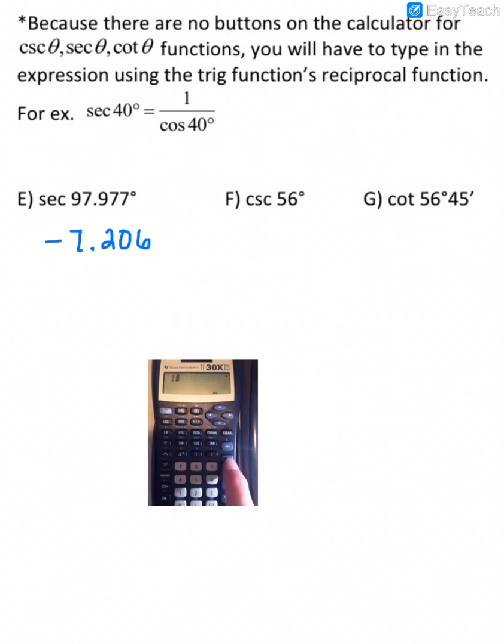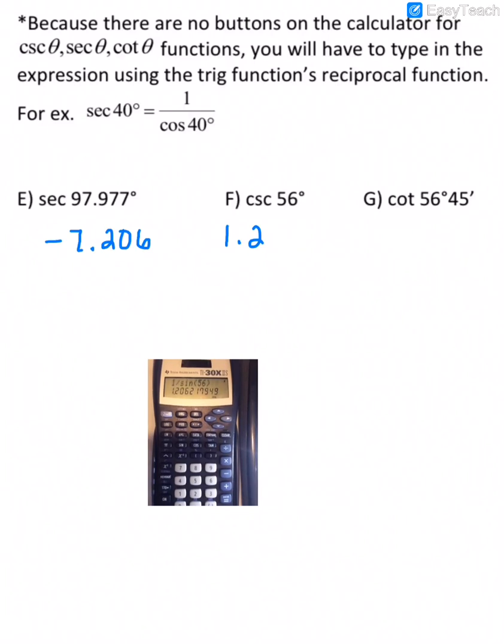So we would just do 1 over, or divided by, sine of 56 degrees, and just sine of 56, and then we get 1.206.